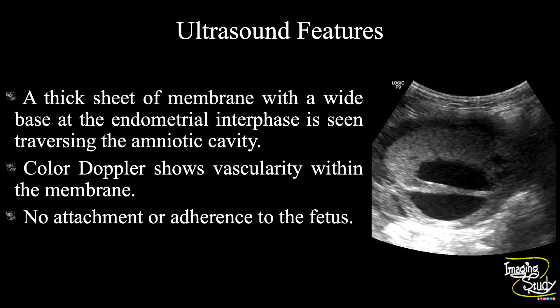In summary, a thick sheet of membrane with a white base at the endometrial interface is seen traversing the amniotic cavity. Color Doppler shows vascularity within the membrane. No attachment or adherence to the fetus is seen. These features suggest this as a case of amniotic sheet or amniotic shelf.